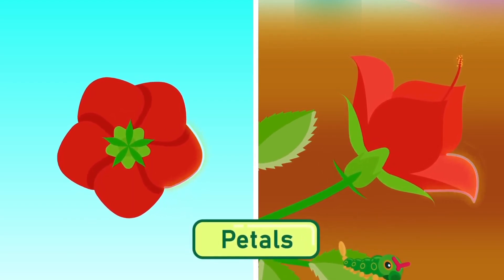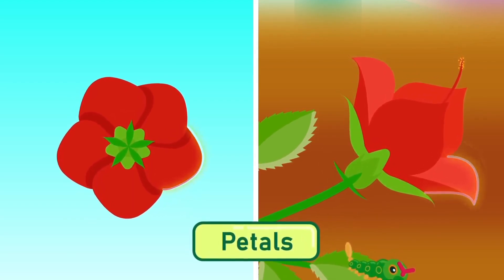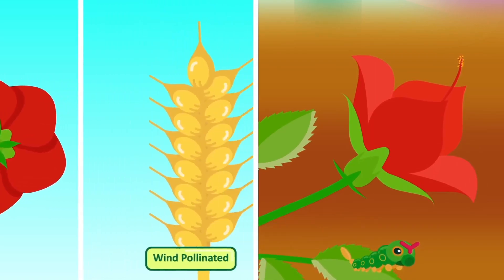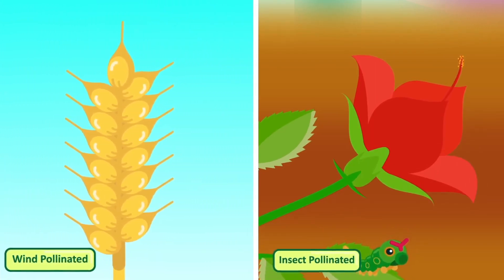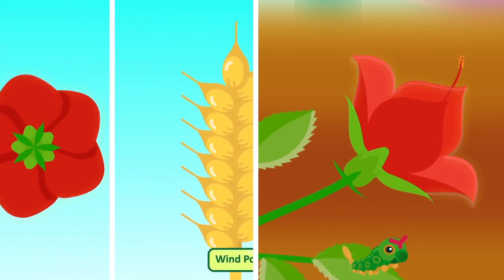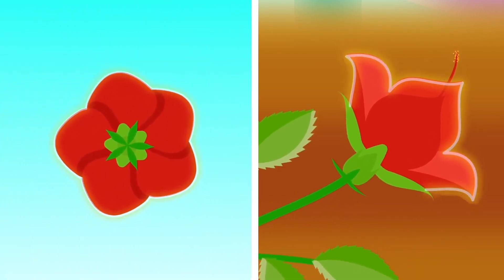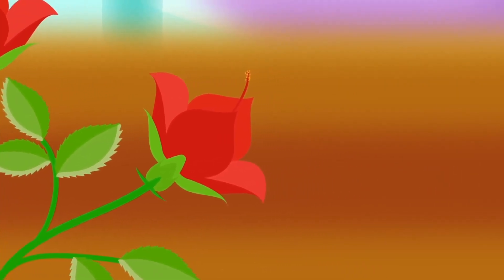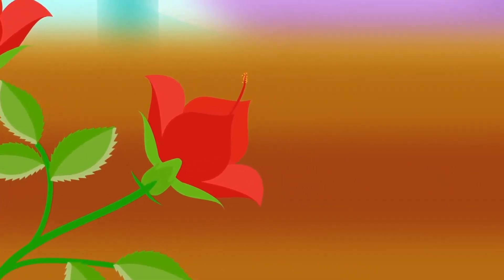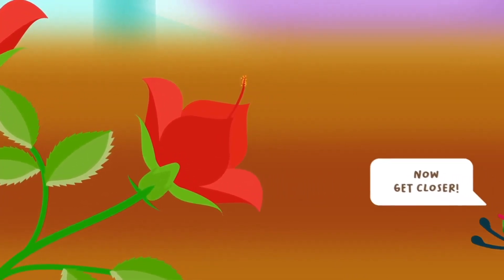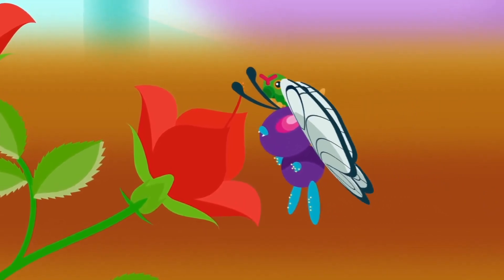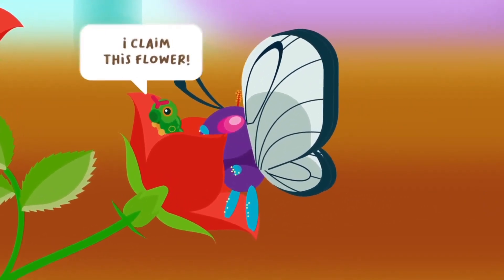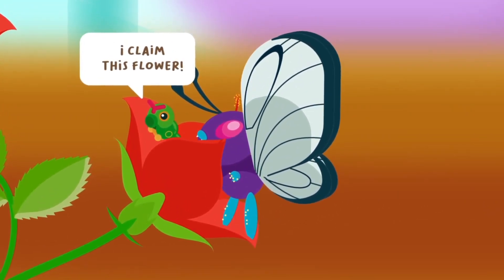Petals are modified leaves forming the conspicuous part of the flower. They are usually brightly colored in insect-pollinated flowers. The whorl of petals is called the corolla. Petals have two important functions: one, to attract insects for pollination, as petals often have striking colors; and two, to provide a landing platform for insects.